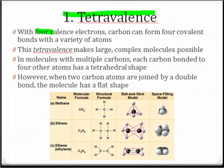In molecules with single or multiple carbon atoms, each carbon bonded to four other atoms results in a tetrahedral shape. In the diagram at the bottom, you can see methane and ethane both form tetrahedral shapes. However, when two carbon atoms are joined by a double bond, as in the case of ethylene in the third row, the molecule ends up with a flat shape. In all three cases, carbon is forming four bonds with other atoms.